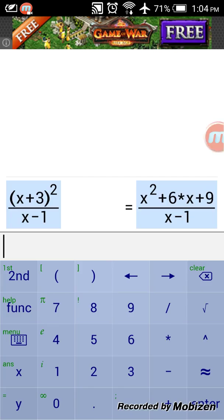So it's x²+6x+9 and gives you the input and the output of the calculation. You can copy to editor, you can convert to numeric, you can plot, and you can delete the line.